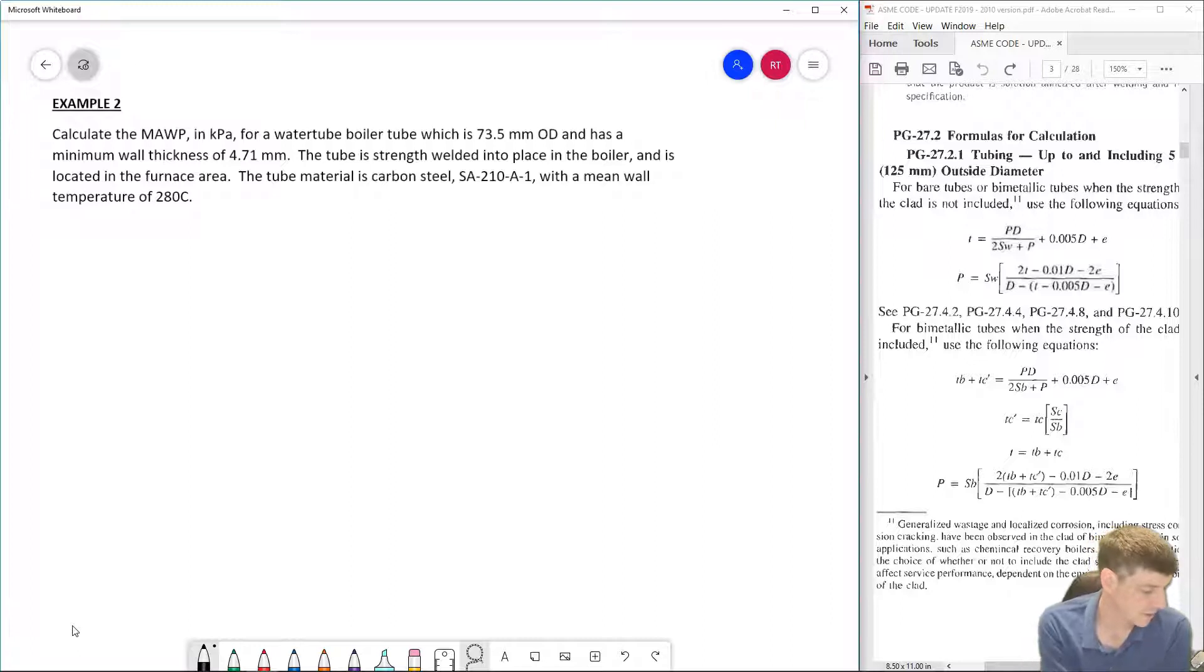Okay, same process that we're going to go through before. First thing we want to do is identify that this is a tube, and the tube is within the limits for tubing - 125 millimeters outside diameter maximum. And it appears that it is, so we are able to use our formulas out of our code for tubing. Because we are looking for our MAWP, we are going to use the pressure version of our formula.